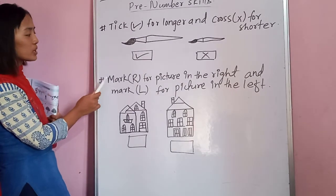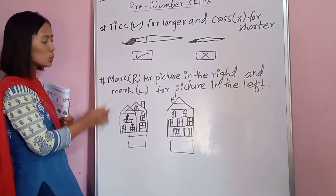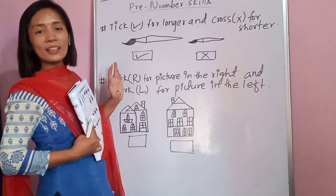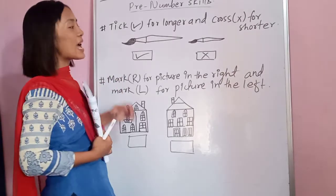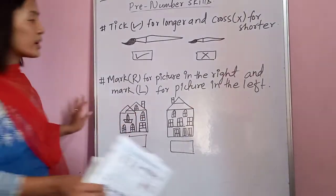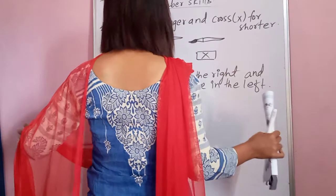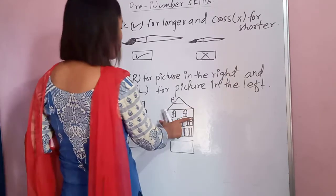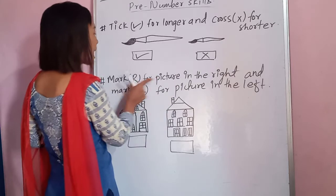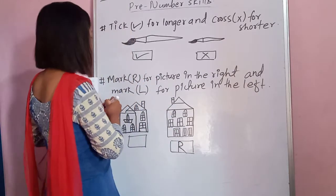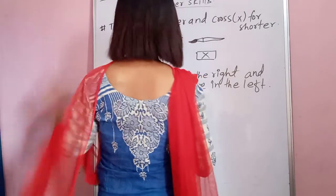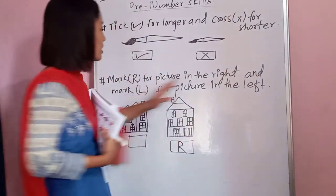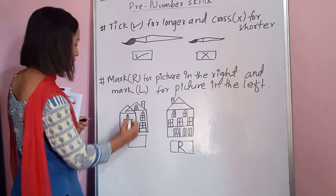The second question type: mark R or L for the picture on the right or left. First, sit like this — this is your right hand, so the picture on this side is on the right side. Write 'R' for the picture on the right side. This other side is your left hand, so for the figure on the left hand side, you write 'L'. This picture is on your left side.